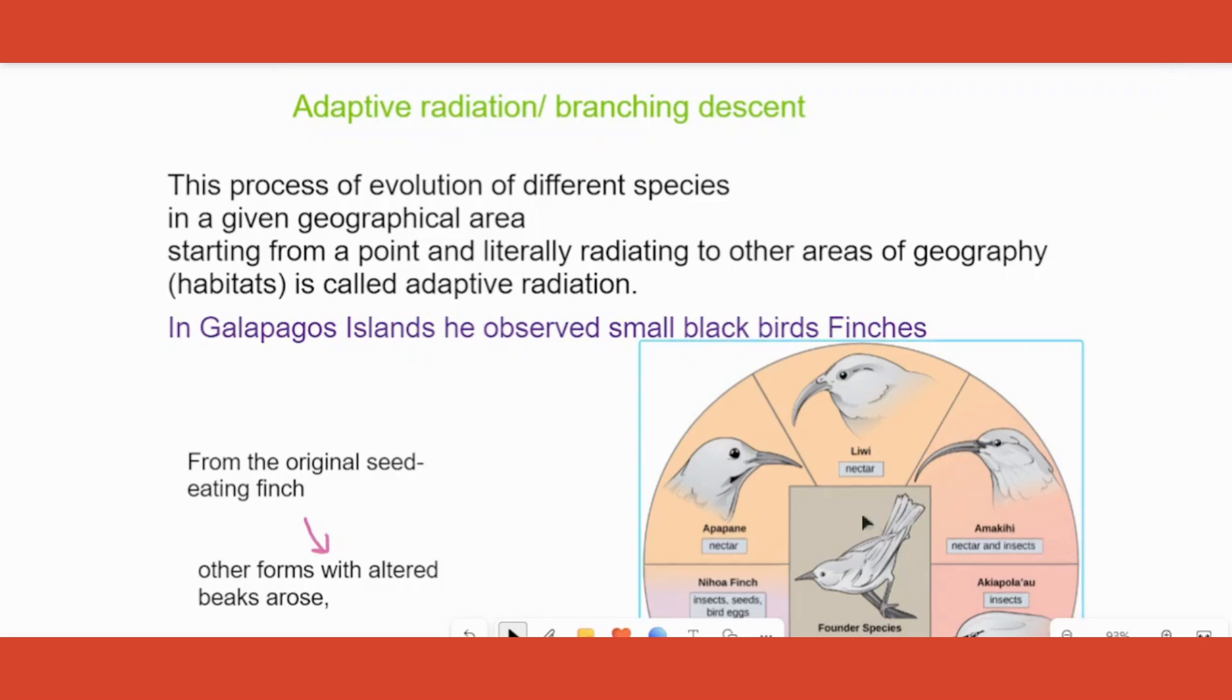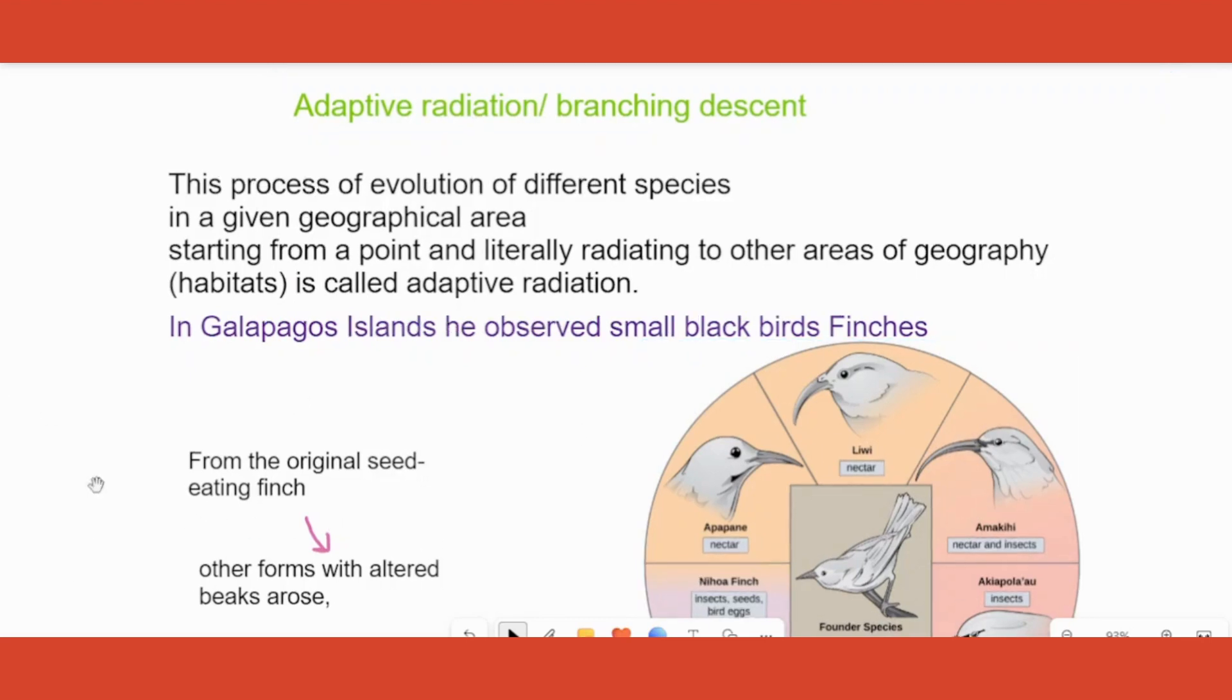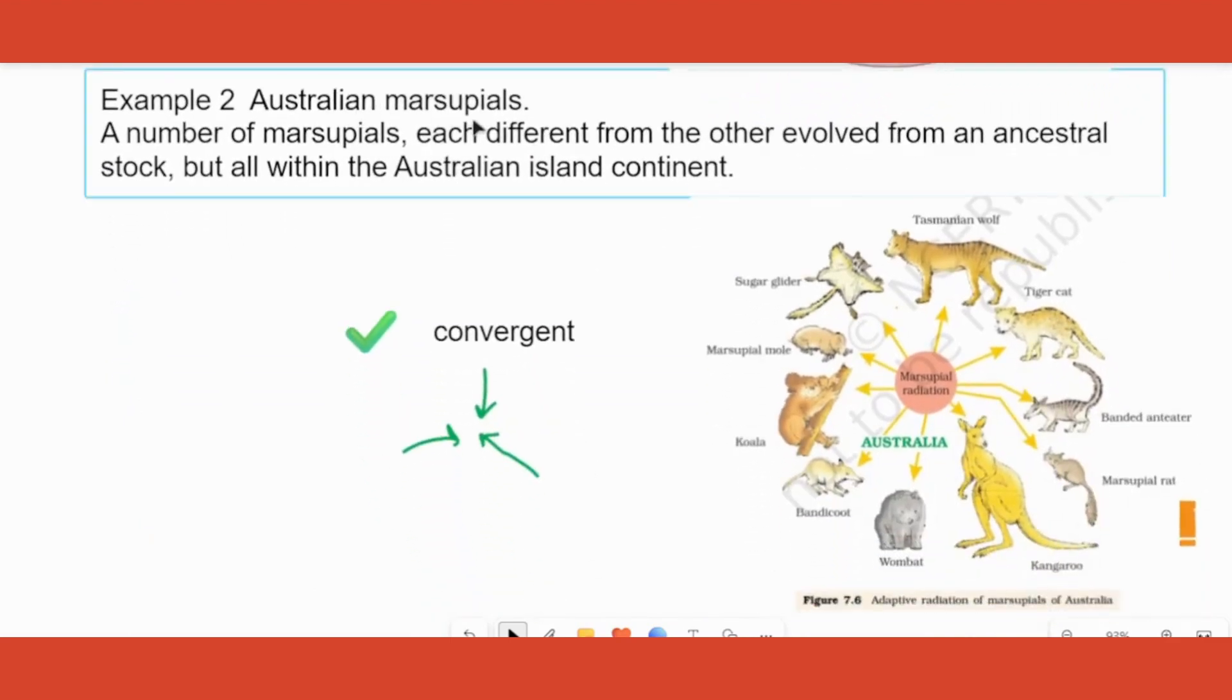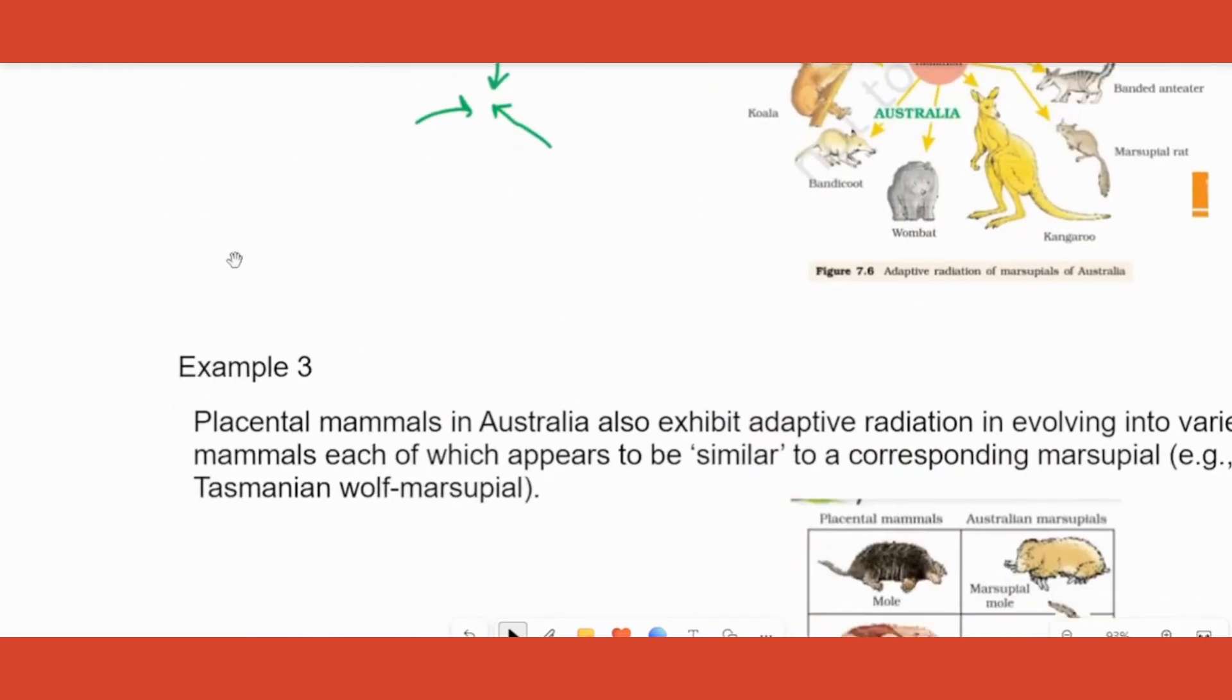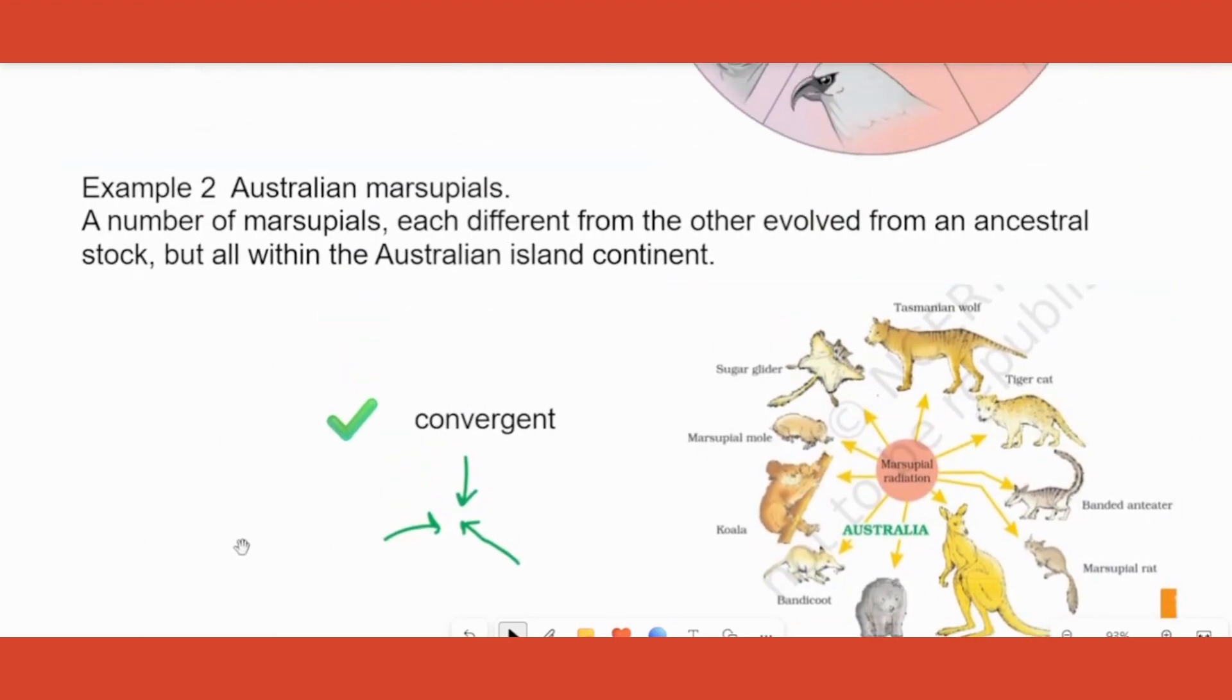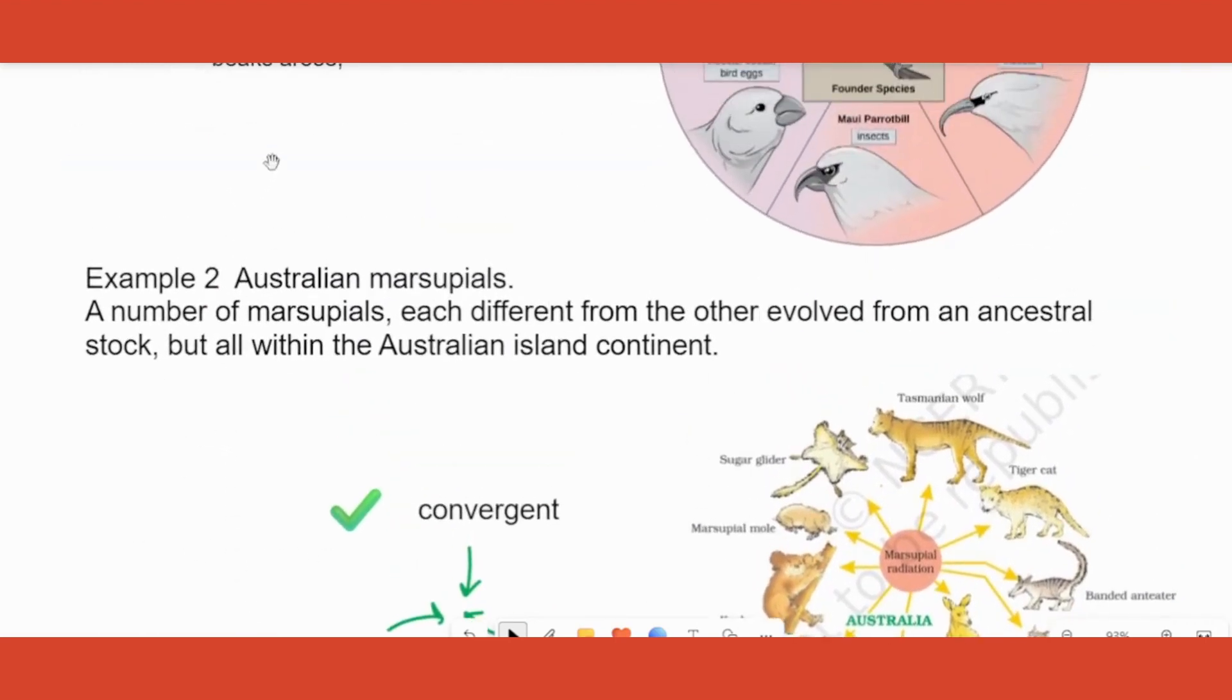One question is definition of adaptive radiation and to explain using finches. Another question is what is the adaptive radiation that is seen in Australian marsupials? Another one is which place have you seen two adaptive radiations happening? So all that we will be covering, please